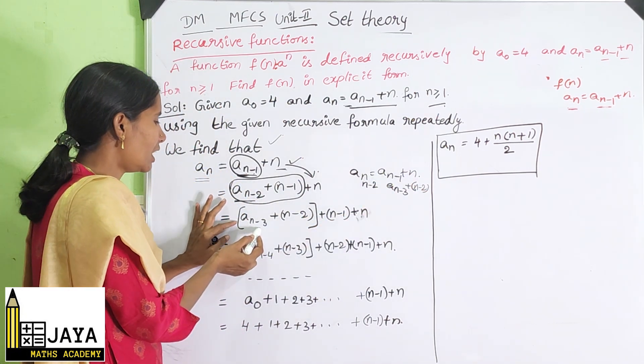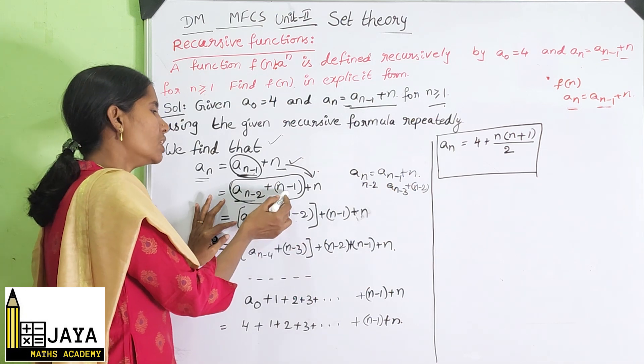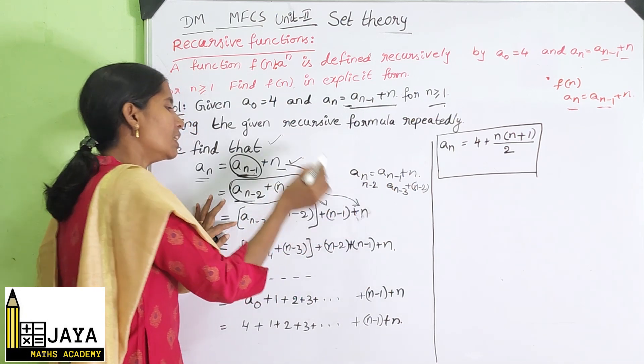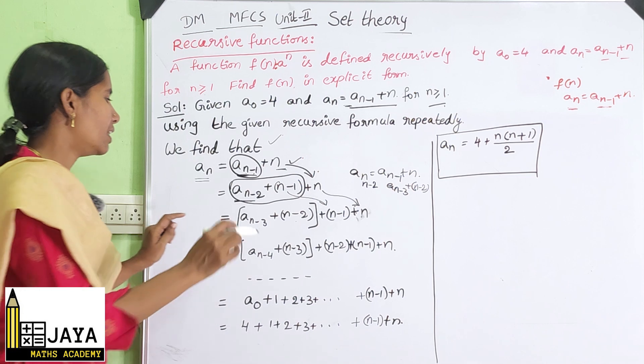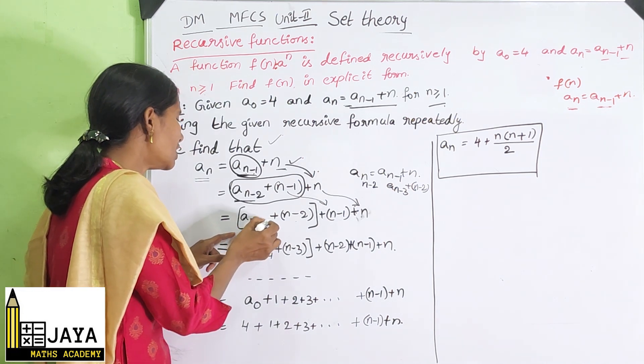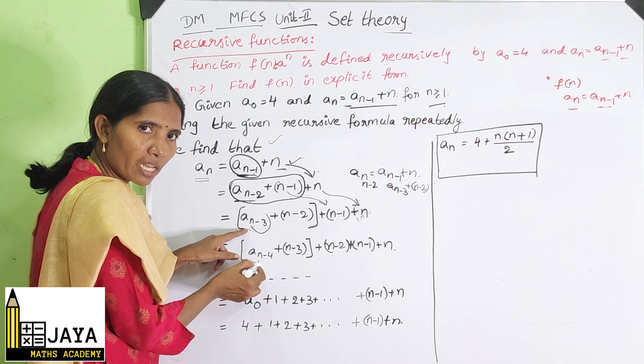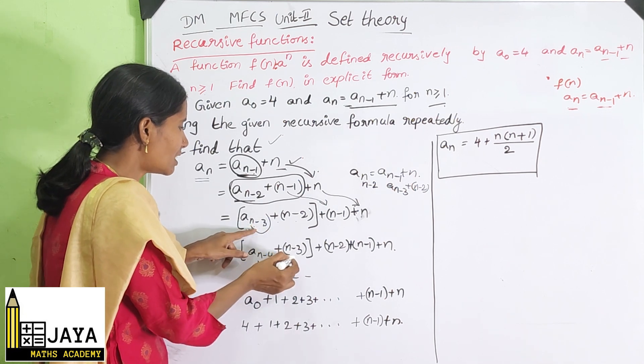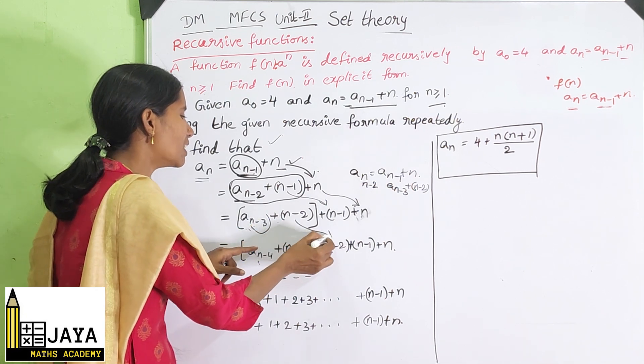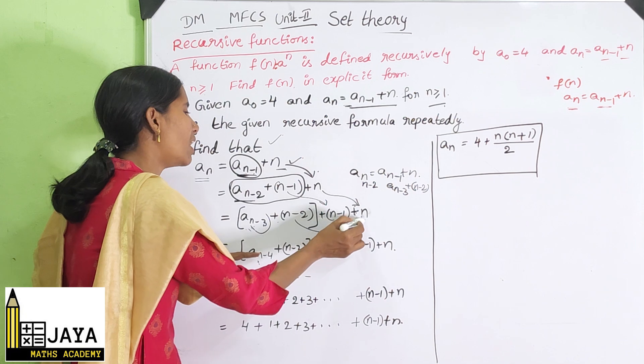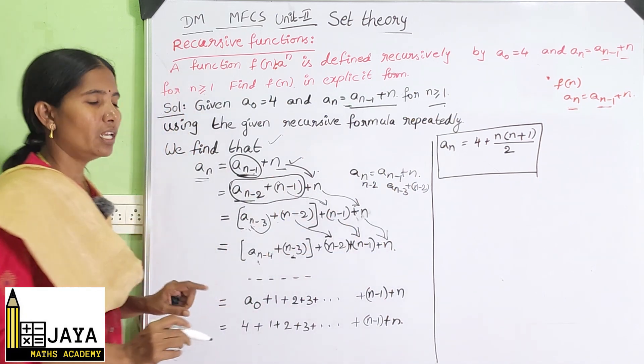This same term can be repeated. Then again for A(n-2), write A(n-4) one term less plus (n-3). Next, (n-2), (n-1), n will come.